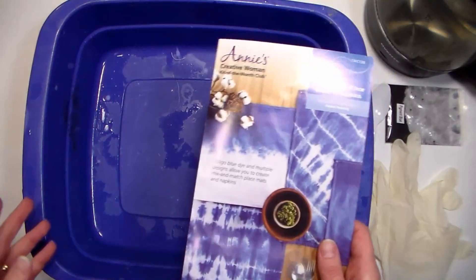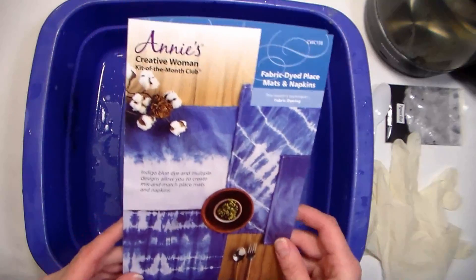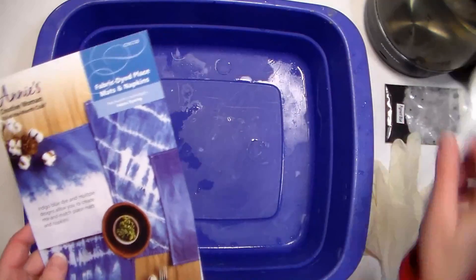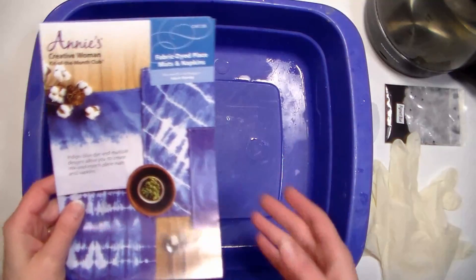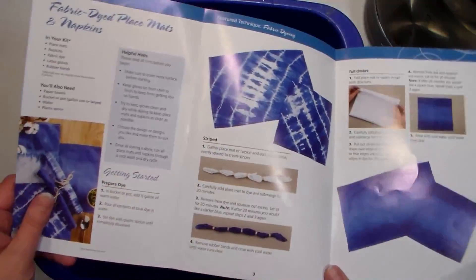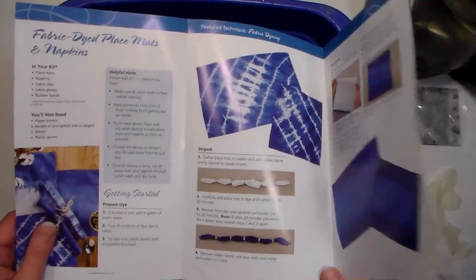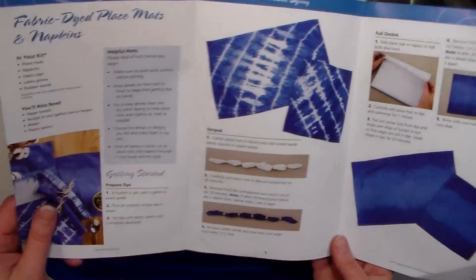So are you ready to try one of these fun projects with me today? Let's go to the table and get started. The first project we're going to work on today is the hand-dyed napkins and placemats. You get everything you need except for a plastic spoon and the bin to dye your project in in the Annie's Creative Woman Kit of the Month Club. You also get an instruction manual that you can always keep for future projects.